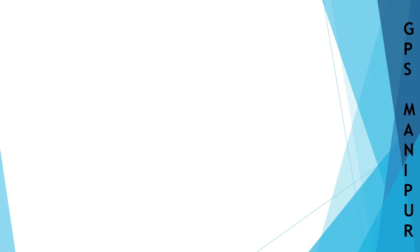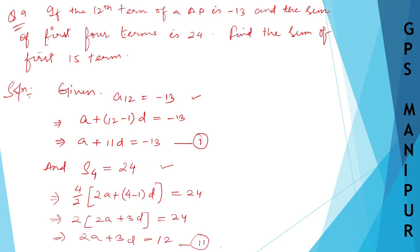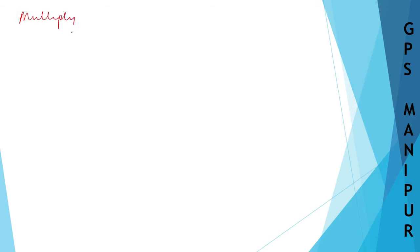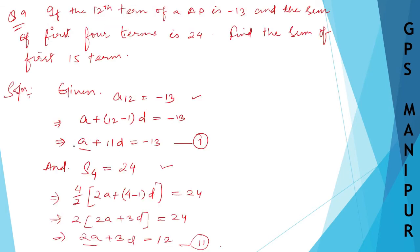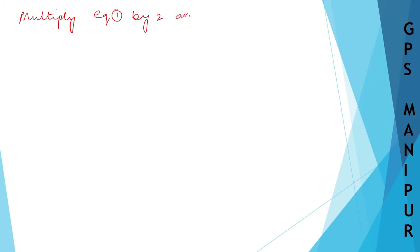Now we need to subtract equation number 2 from equation number 1. For that we need to make one of the terms equal. The first equation has A and the second has 2A, so we multiply equation number 1 by 2 so both have 2A and we can cancel.